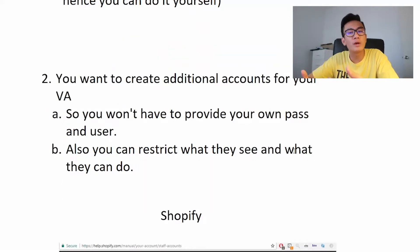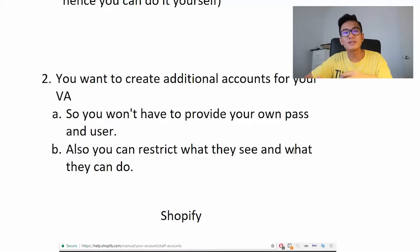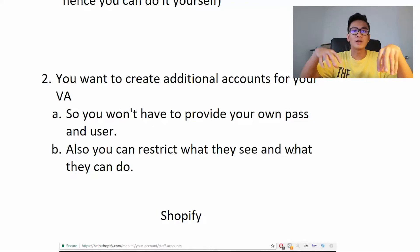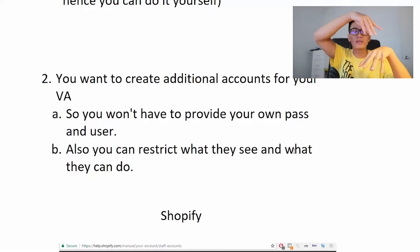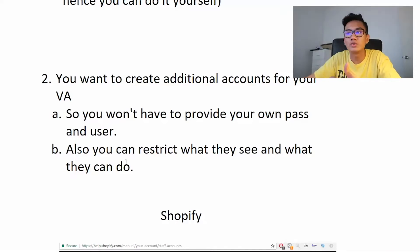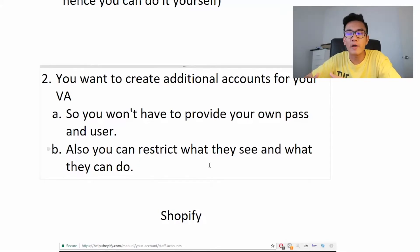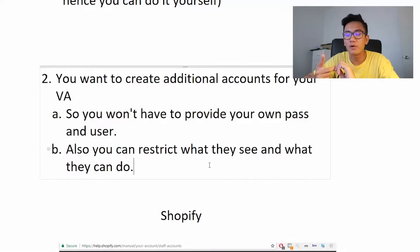You want to create additional accounts for your VA because you don't want to give them your PayPal account, your Stripe account, or your Shopify account — that's a big no-no. This means creating a sub-account under your main account, providing them with certain permissions. You don't have to share your own password and username, and you can restrict what they see and can do. With my PayPal account, I only allow refunds, orders, and apps.